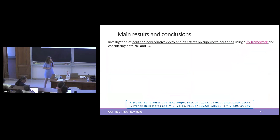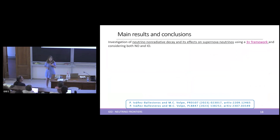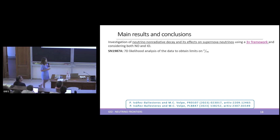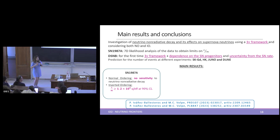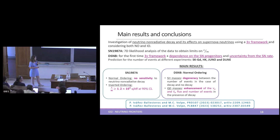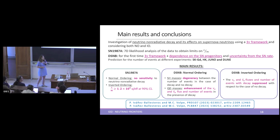To summarize: we have performed an investigation of neutrino non-radiative decay and its effect on supernova neutrinos using a three-neutrino framework, considering both normal and inverted ordering. For supernova 1987A, our likelihood analysis extracted limits on τ/m in the case of inverted ordering. For the DSNB flux, we included for the first time a three-neutrino framework plus a detailed astrophysical model. In normal ordering we found complete degeneracy for strongly hierarchical masses but an enhancement for quasi-degenerate masses. In inverted ordering, we see a complete suppression of the number of events. Thank you.